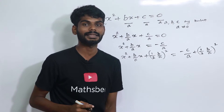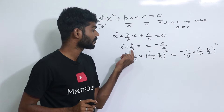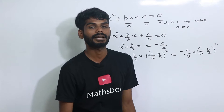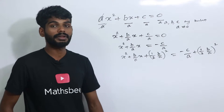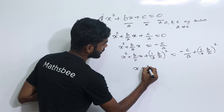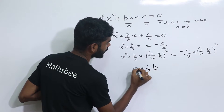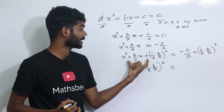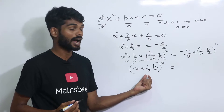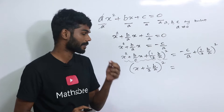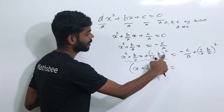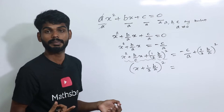We simplify the left hand side. The expression x plus half of b by a, all squared, expands as a squared plus 2ab plus b squared. So 2ab gives us 2 into x into b by a, and the 2 cancels, giving x into b by a.